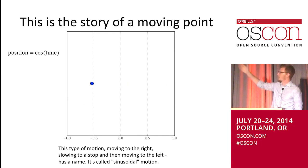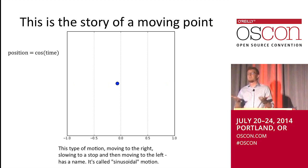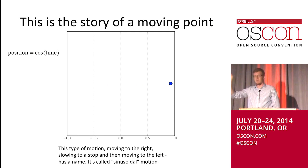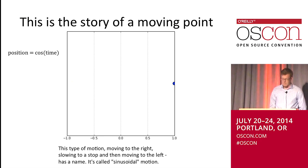This talk is the story of a moving point. This point is moving in one dimension — the horizontal dimension — moving left to right. Time is increasing infinitely, but the function that returns the position of this point on the horizontal axis causes it to oscillate. It's a periodic function — the cosine function. The position of the point on the x-axis in Cartesian coordinates is the cosine of time.